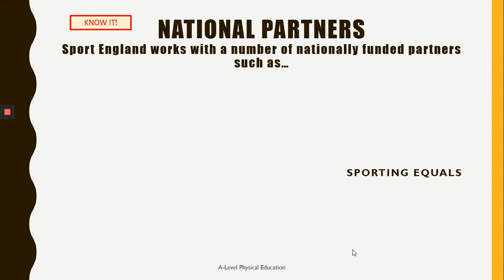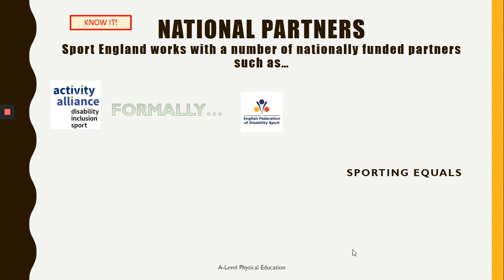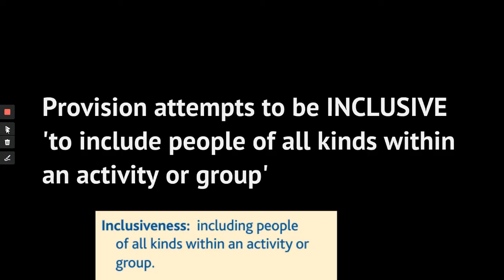Your homework for today is to look at two other national partners for Sport England: the Activity Alliance — formerly known as the English Federation of Disability Sport — and Sporting Equals. Just as with previous homeworks, you need to find out who they are, what they do, and who they impact on. So you're going to find out about specific programs run by those two national partners.